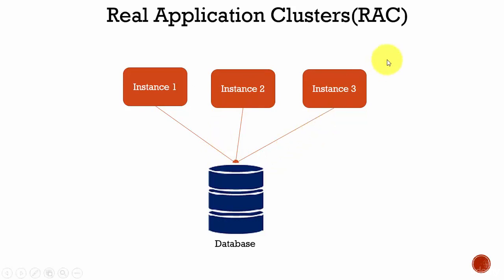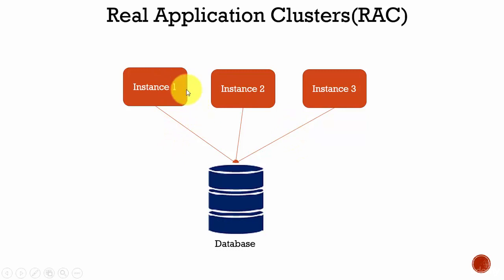The reason is it provides scalability and higher availability. When I say scalable, multiple user processes can use this instance to access the database. In this way, you can support a huge number of users — that is what scalability means. And higher availability: suppose, for example, if this instance is down, still we have the other two instances up and running and can serve the customers. That is called higher availability.